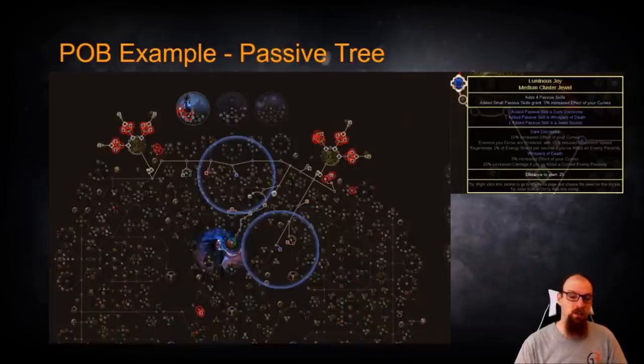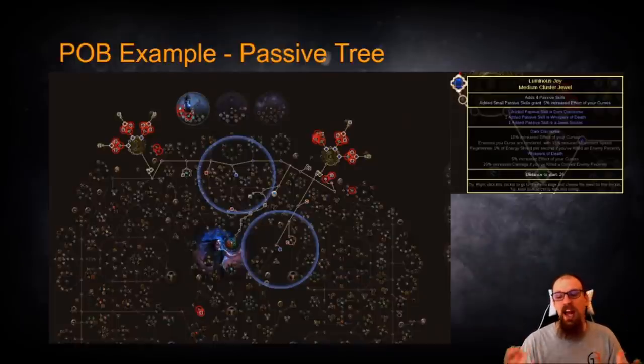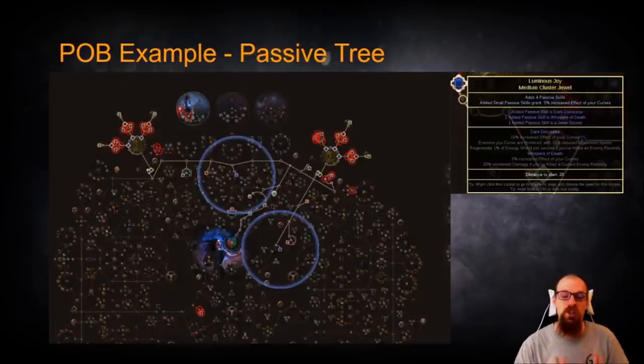what we are doing is we are grabbing as much Energy from Nought as possible. Those are on our Small Cluster Jewels. And then we're simply trying to stack Dark Discourse and Whispers of Death in as many places as possible to stack our Curse Effectiveness.